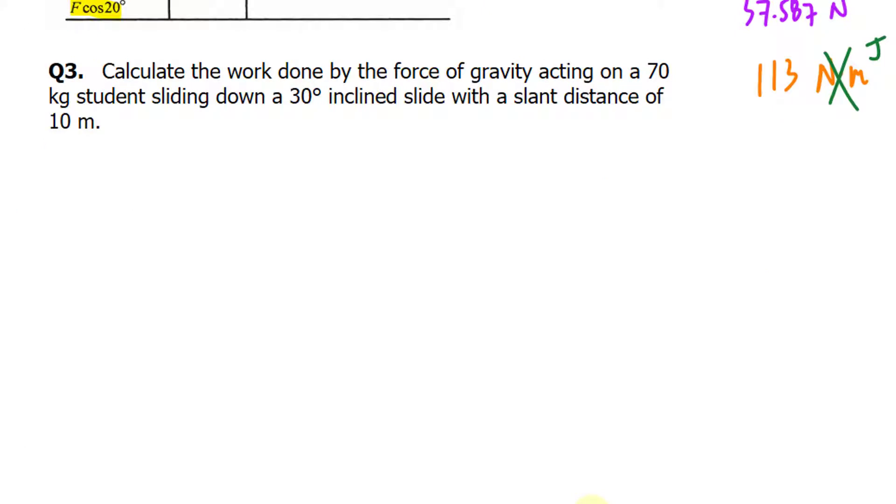Let's move on to the third and final question. Calculate the work done by the force of gravity acting on a 70 kilogram student sliding down a 30 degree incline slide with a slant distance of 10 meters. Let me show you what's happening. We have a slide at 30 degrees along the horizontal. The person sliding is represented by the circle and there's a force going directly down due to gravity.